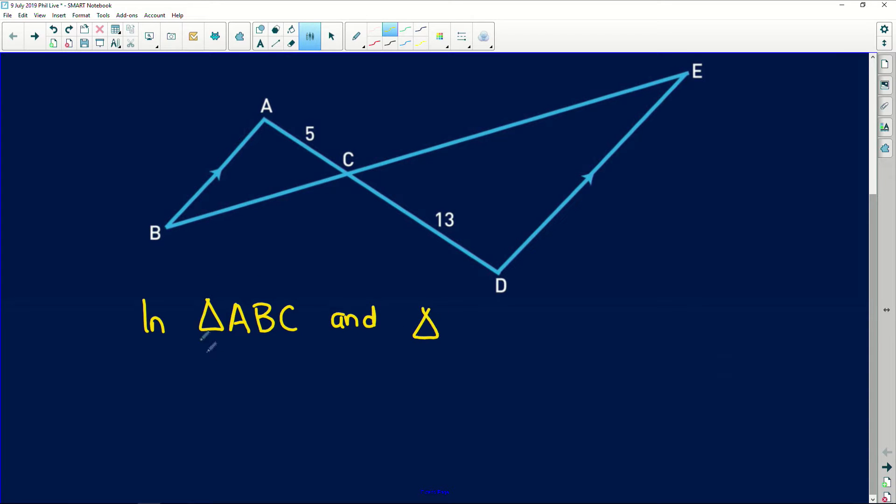Now you want to try and label them so that the corresponding vertices go together. So I can automatically see that angle A is equal to angle D. Similarly, vertex B corresponds with E. So we label it like this, D, E, C. Firstly, I said that angle A is equal to angle D.